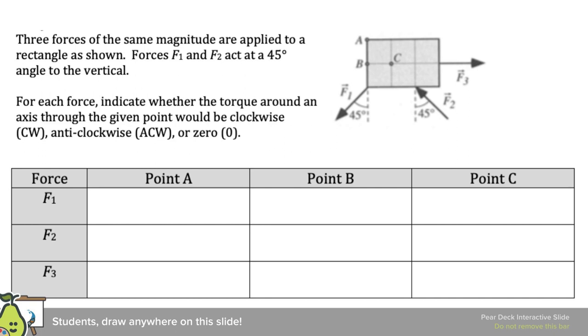So if we talk about rotating about point A, then we can see that F1 would tend to spin this whole thing that way about point A. And that is clockwise. For force two, we can see that the line of action goes through the point of rotation, so we get zero torque. For force three, there will be some rotation, and if I pull this way on this piece of cardboard, it's going to move that way, and so we're going to get anti-clockwise.